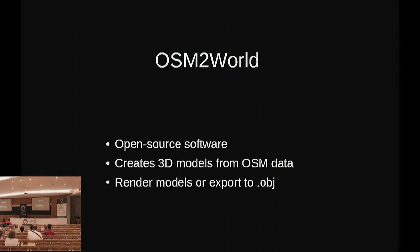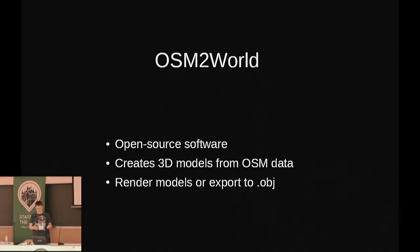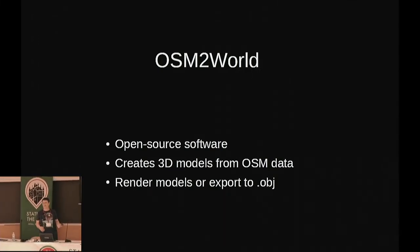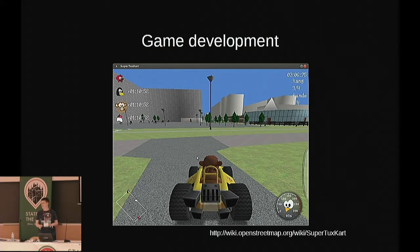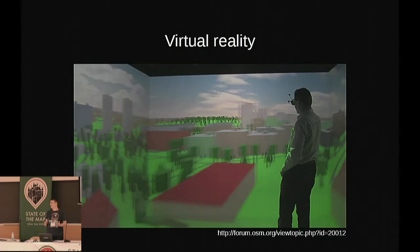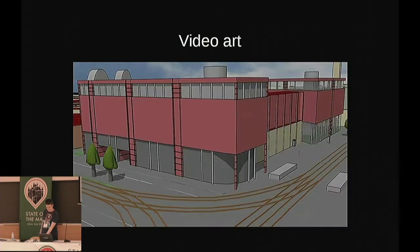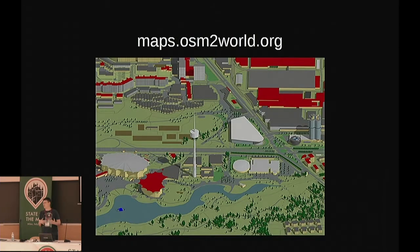OSM2World can be used as a library in other programs, it can export the model to a modeling format such as Wavefront OBJ, and it can render the model directly using OpenGL. For example, my software can produce 3D scenes rendered with OpenGL. It has been used for game development — some users have tried creating SuperTuxKart race tracks from OpenStreetMap data. Users have also been experimenting with virtual reality or creating art and videos using OSM2World. If you want to preview the abilities of OSM2World without installing it, there's an online map using Leaflet that gives a quick glance at the functionality.